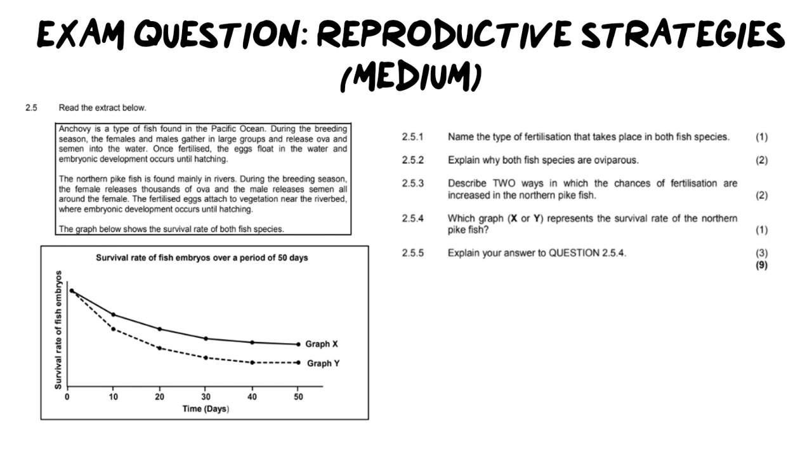Let's get into the question starting off with the paragraph. It says anchovy is the type of fish found in the Pacific Ocean. During the breeding season females and males gather in large groups and release ova and semen into the water. Already you should be envisioning external fertilization.